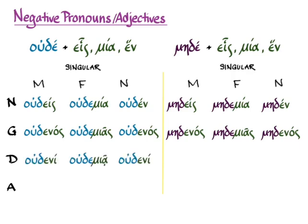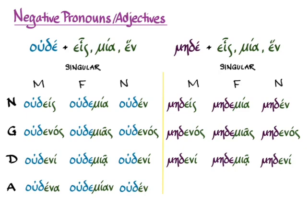The dative is oudeni, oudemia, oudeni — with maydeni, maydamia, and maydeni for the may form.